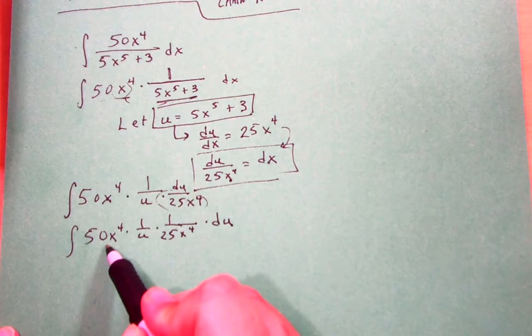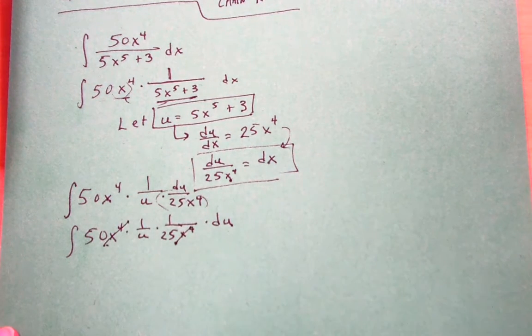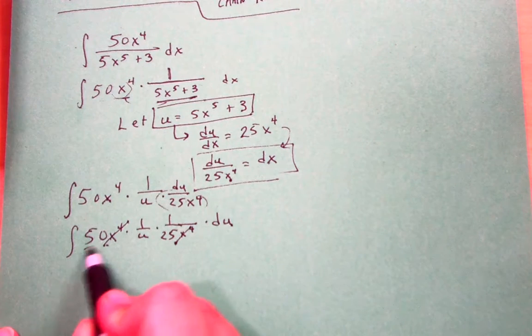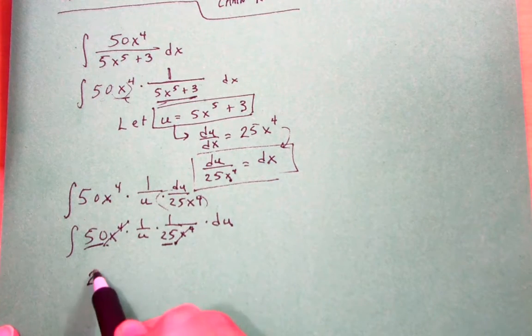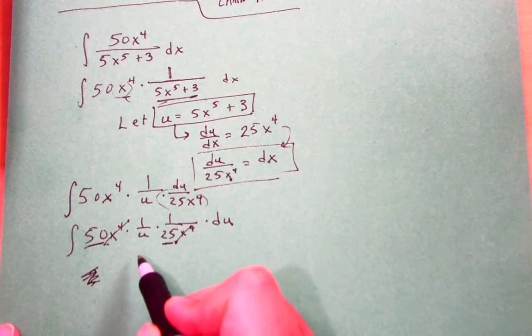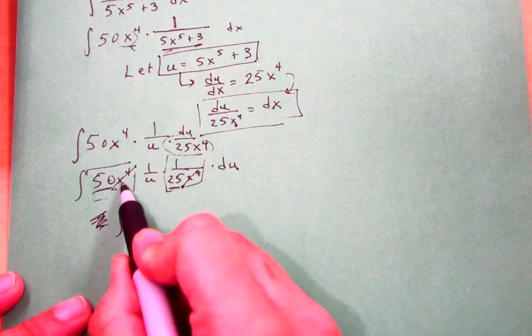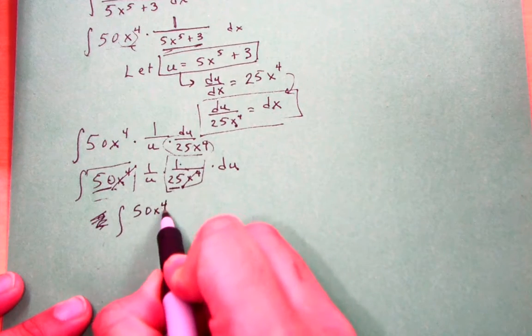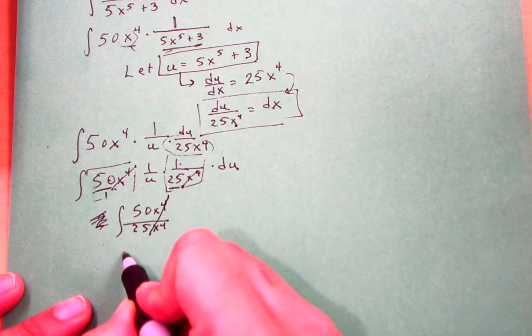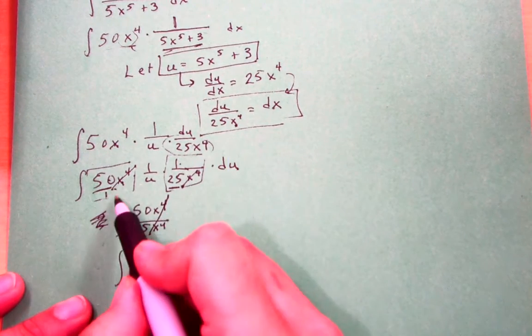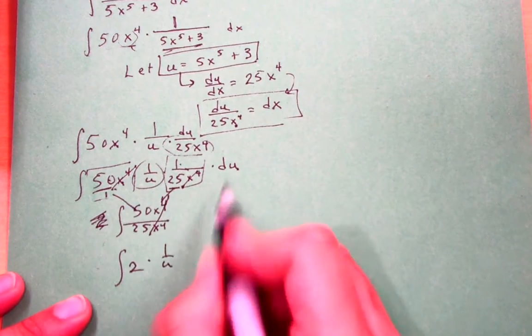Well, I have x to the 4th multiplying times 1 over x to the 4th so hopefully you can see that these terms will cancel very nicely. Moreover 50 divided by 25 will just give me a nice 2. So if I went too fast there, let me kind of break it down in a bit more rigorous detail. If I were to combine this term and this term, I would end up with 50x to the 4th over 1 times 25x to the 4th. And hopefully you can see that this would just give me 2. So these terms combine to give me 2. I also have 1 over u right here, and then I have du.